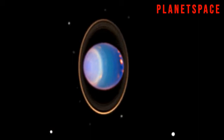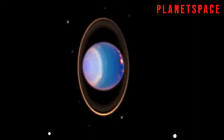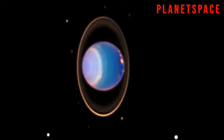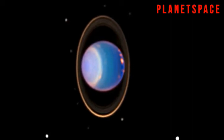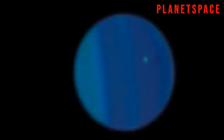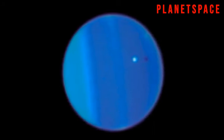Uranus has rings around it, although they are much smaller than Saturn's, and 27 known moons. Uranus is covered in blue clouds made of methane, which give it its lovely color.